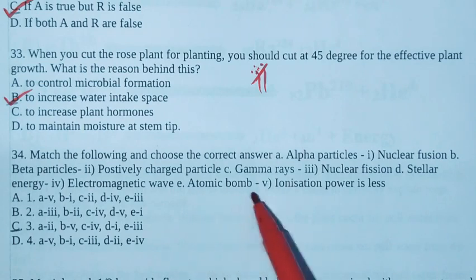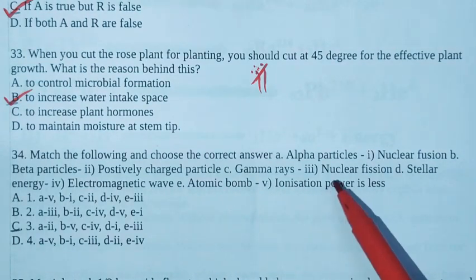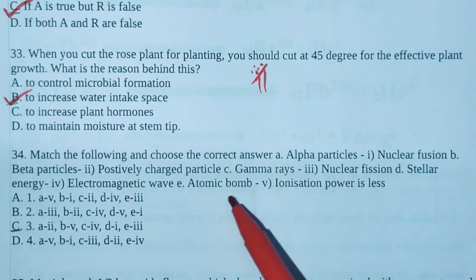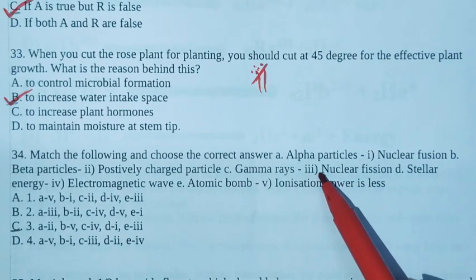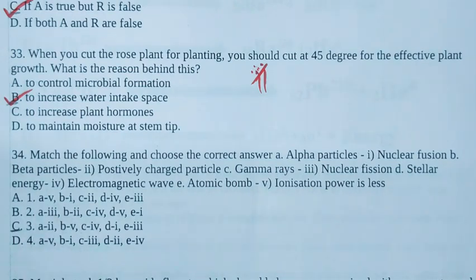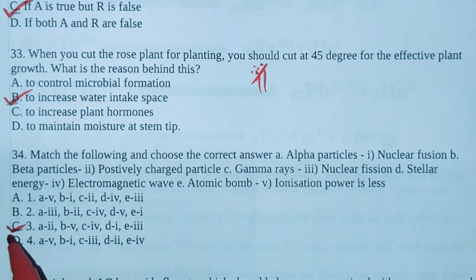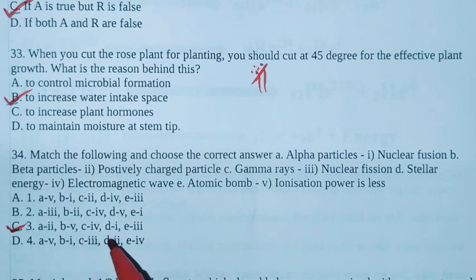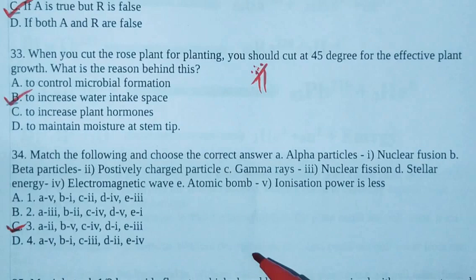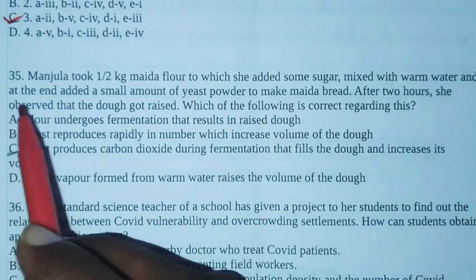Next E, atomic bomb. Atomic bomb works on nuclear fission principle. So E is option 3. According to this, option C is the right answer. That is A2 B5 C4 D1 E3. Students, you can write one below one, that is easy to identify the correct answers.